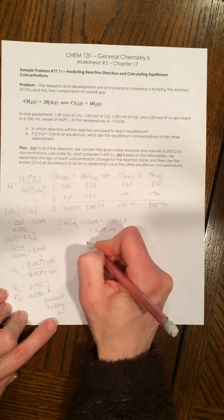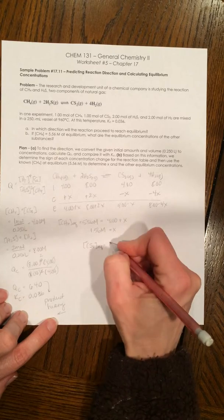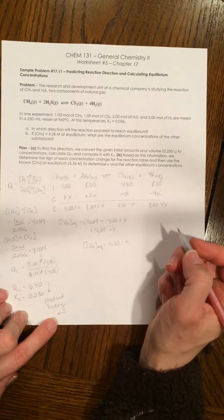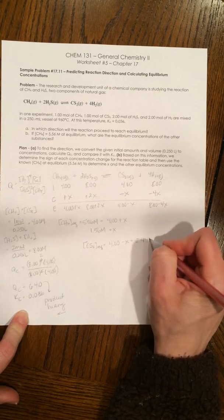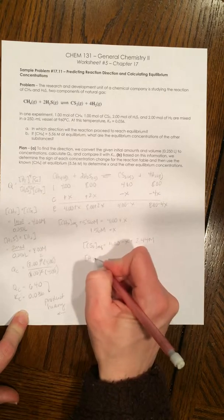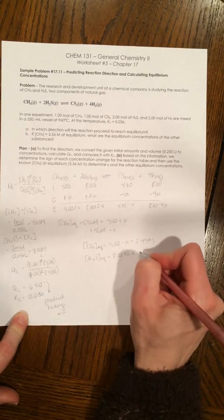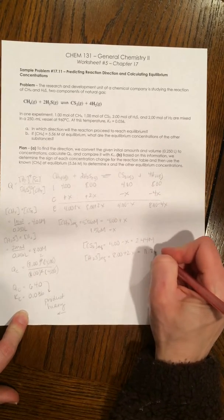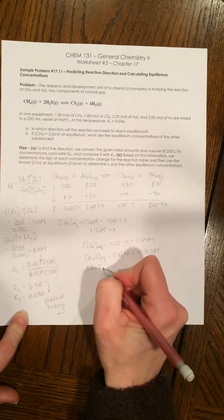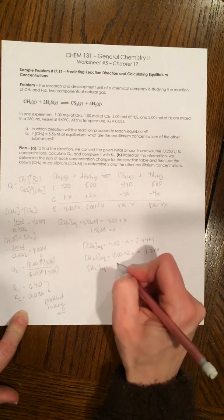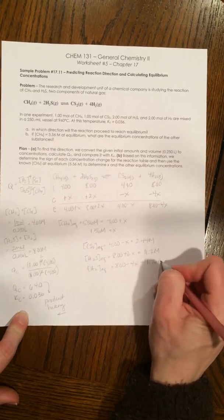So in this case, the equilibrium concentration of CS2 is equal to 4.00 minus X. And that's going to be 4 minus 1.56. So that's going to be 2.44 molar. Equilibrium concentration of H2S is going to be equal to 8 plus 2X. That's going to be equal to 11.2 molar. So 8 plus 2 times 1.56. And then lastly, H2 concentration of equilibrium is going to be equal to 8 minus 4X. And that's equal to 1.76 molar.